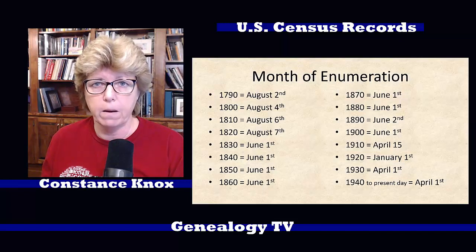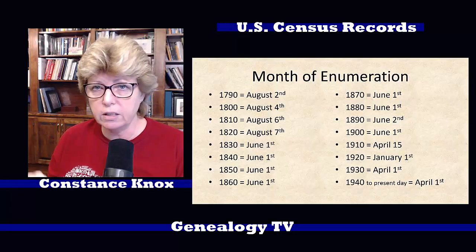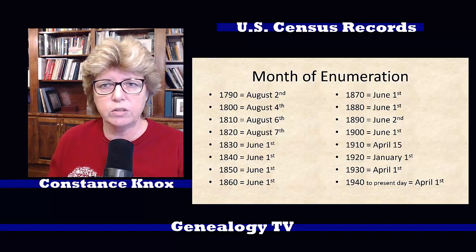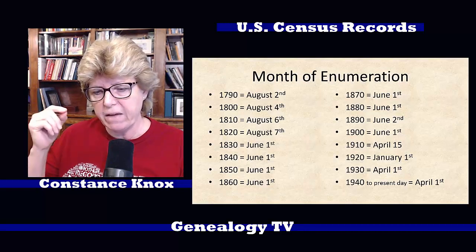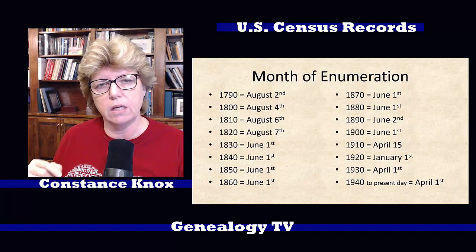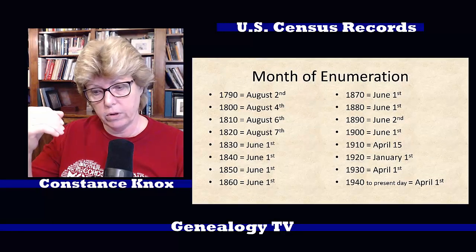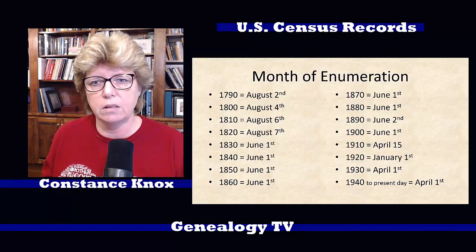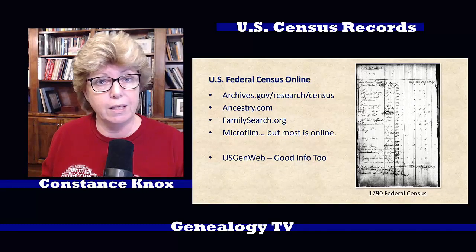The enumeration month on the early schedules was in August. In 1830, 40, 50, 60, 70, 80, 90, and 1900 it was in June. In 1910 it was in April. In 1920 it was January 1st. In 1930 it's April 1st, and on to present day has been in April. The reason for that is, if a person is listed as say seven years old but hasn't had his birthday yet, it'll make a difference when you're estimating the birth year. Whatever the age of the person was at that time is going to determine what year he was born. So it's important to note on each record what the enumeration month and day was at the top of the schedule.